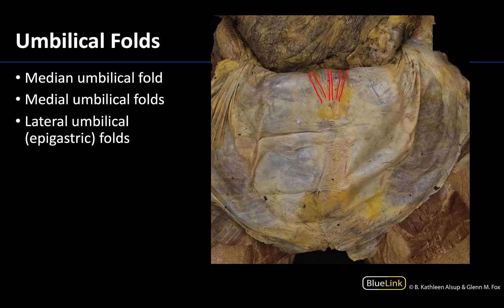Lastly, there are the paired lateral umbilical folds, which are notably lateral. On this individual I think they're kind of difficult to observe — I'm outlining one right here; the other one would be in this general region, but it's not quite as noticeable. You can see a bit of it in this middle portion here.